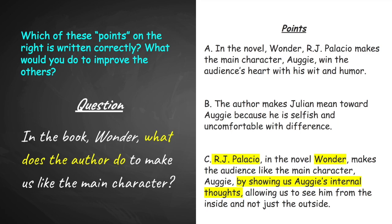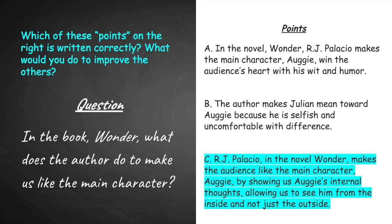Our last point reads: RJ Palacio in the novel Wonder makes the audience like the main character Augie by showing Augie's internal thoughts, allowing us to see him from the inside and not just the outside. Hopefully you identified that this is indeed the best point here. It contains all the necessary information — the author's name, the title of the text — it uses keywords from the question, and it clearly answers the question itself.